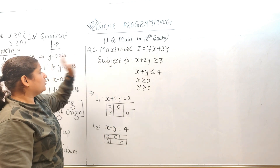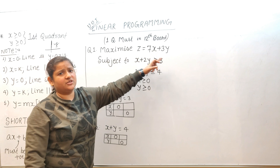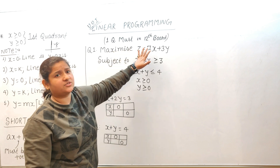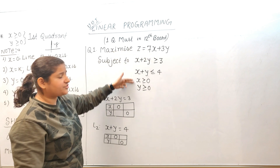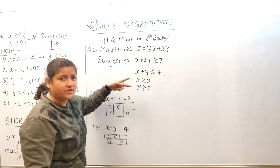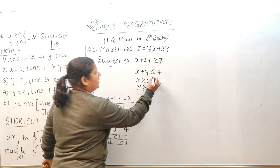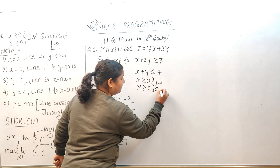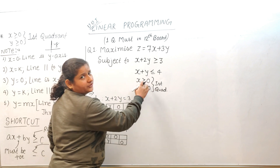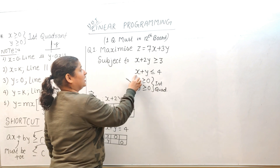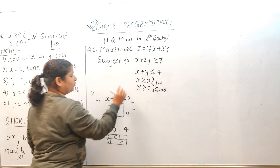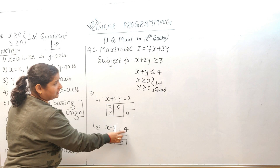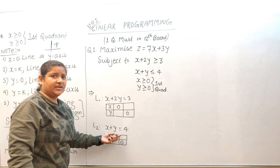This is a long answer question — it could ask to maximize or minimize, and we will use the objective function at the end. These are our constraints. The two conditions x ≥ 0 and y ≥ 0 appearing in every question mean first quadrant — I won't work on those separately. I convert the inequalities to equations by replacing the inequality sign with an equal sign.